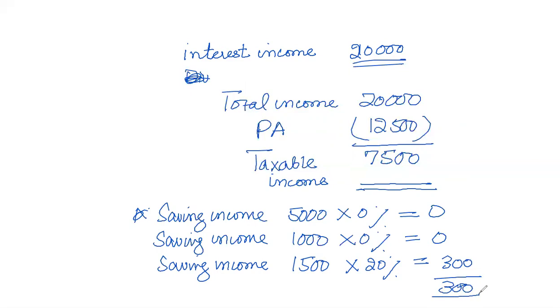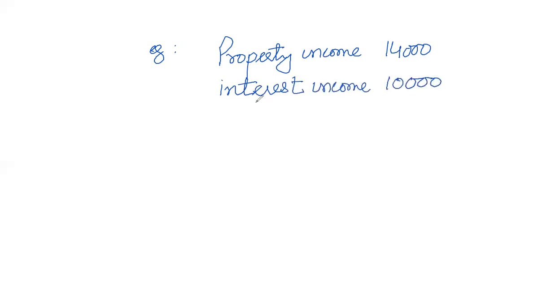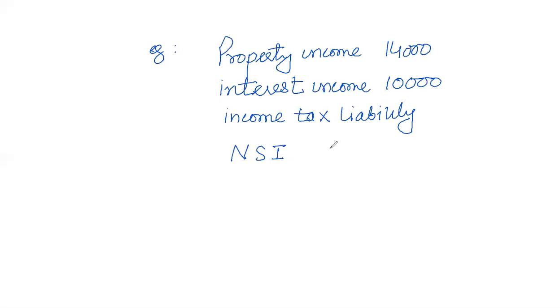That covers the first situation. For the second situation, where there is non-saving income but it is less than £5,000: for example, property income of £14,000 and interest income of £10,000. We create a proforma with non-saving and saving income columns. Total income is £24,000. After deducting personal allowance of £12,500, taxable non-saving income is £1,500 and taxable saving income is £10,000.